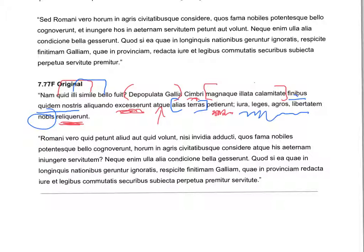Romani vero, quid petant, aliud, aut quid volant? Nisi invidia aducti. We've got Romani, which is nominative, and quid, which is accusative. The verb that goes with Romani is petant. Then we have another accusative, aliud — quid and aliud go together: what else? And another quid with volant, another verb talking about the Romans.